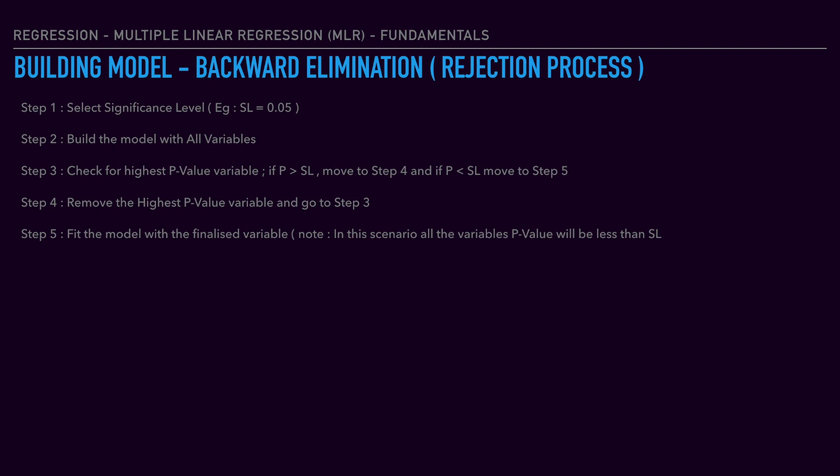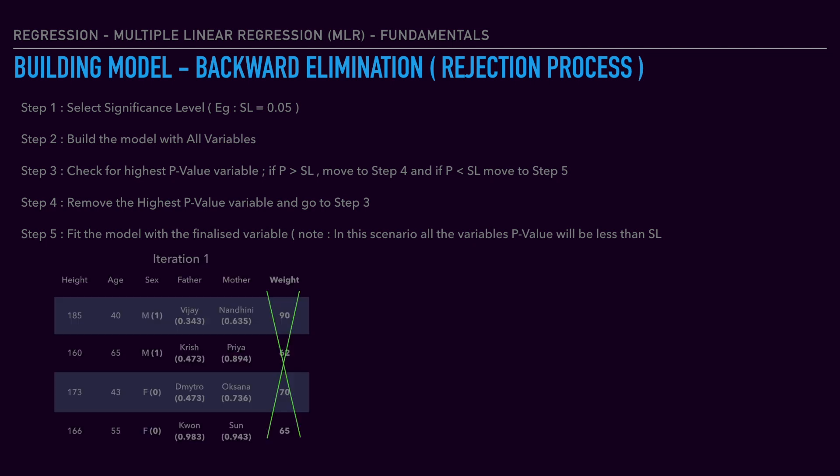Step five is fitting the model with the finalized variables. For more understanding, let's carry out this process using a sample dataset. The dataset has variables: height, age, sex, father, and mother — five independent variables — and weight as the dependent variable. Sex, father, and mother are text data, so we can convert them to numerical data. One assumption is that we use numerical data in the model.